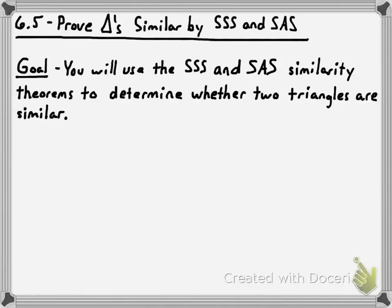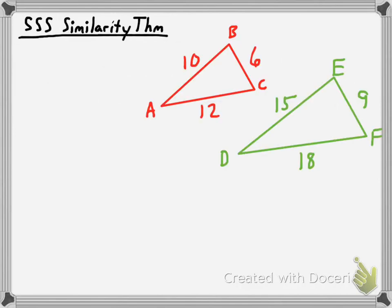Hey, glad to have everybody here. We're going to continue our discussion on how you prove that triangles are similar to one another. We learned in the last video how you use the angle-angle similarity postulate to prove that two triangles are similar. Now, we're going to use the SSS and the SAS similarity theorems in order to prove that two triangles are similar, as you see written in the goal. Two new theorems for us to learn.